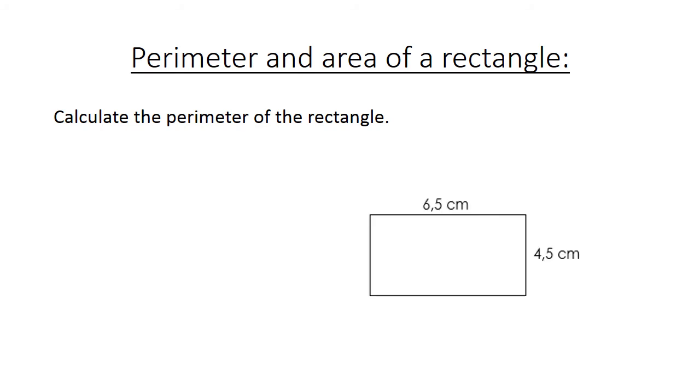The perimeter and area of a rectangle. Calculate the perimeter of the rectangle. Here we have a rectangle. 6.5 cm is my length, always the longest one.